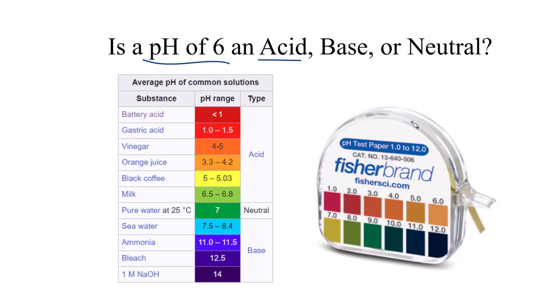So when we look at the pH scale, we have 7. That's right in the middle. So 7 is going to be neutral. It's not an acid or a base.